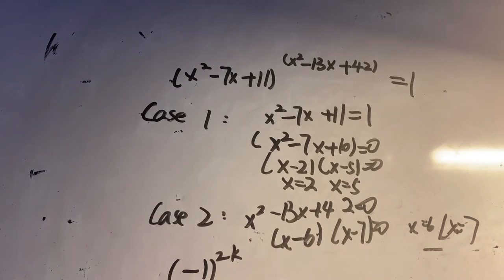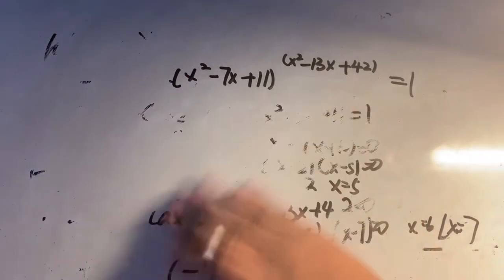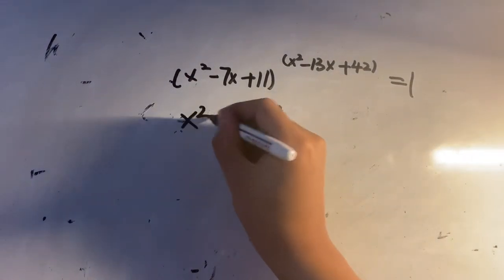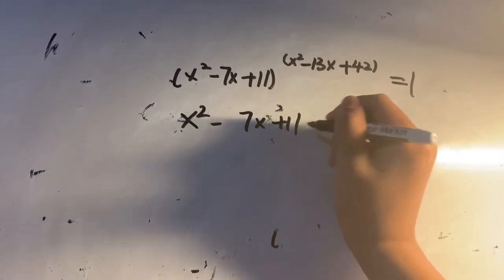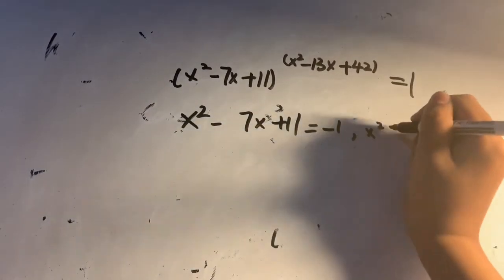Negative 1 to the power of k, where k is an even number. We have to deal with this third case where the exponent is even.